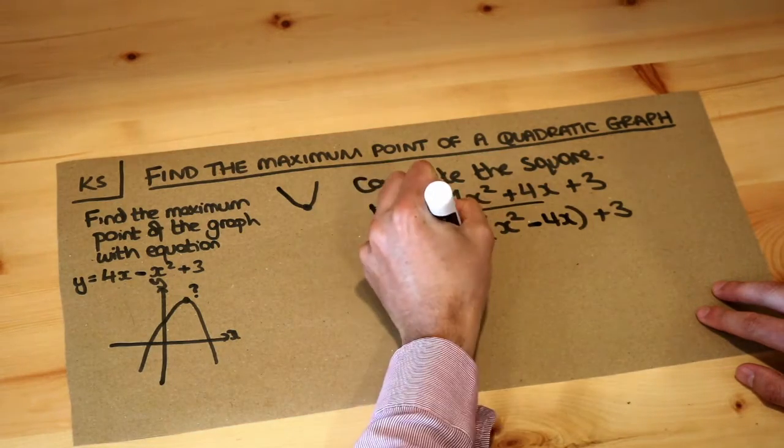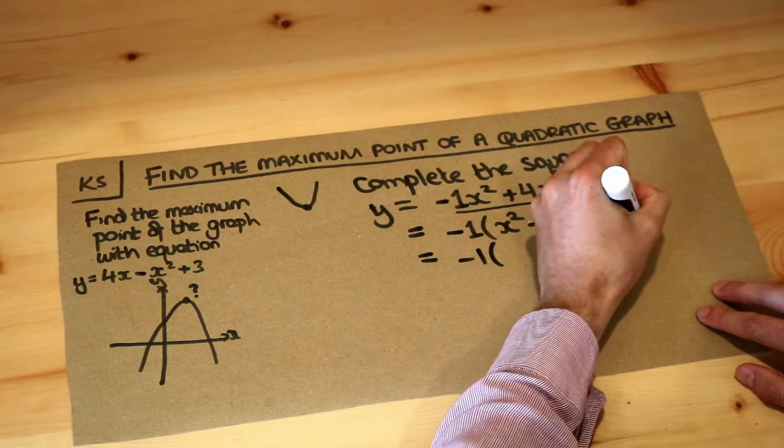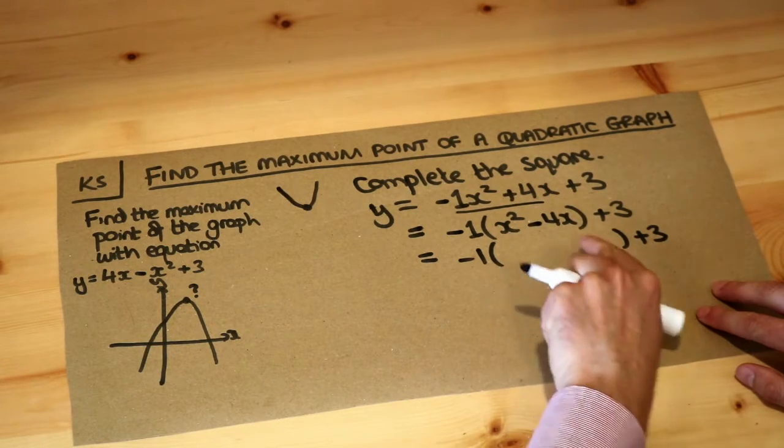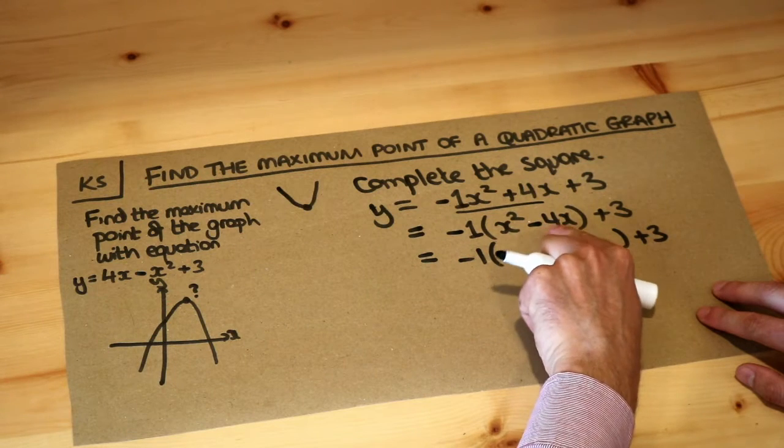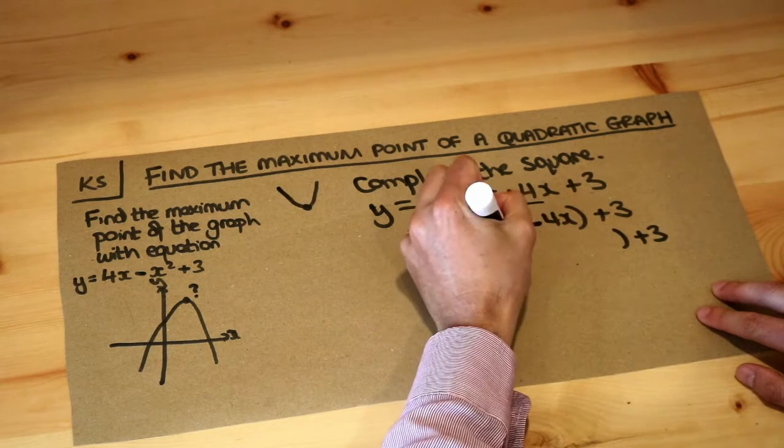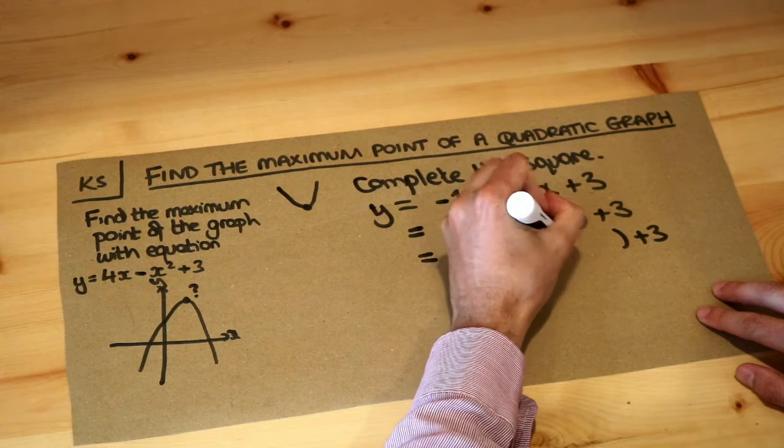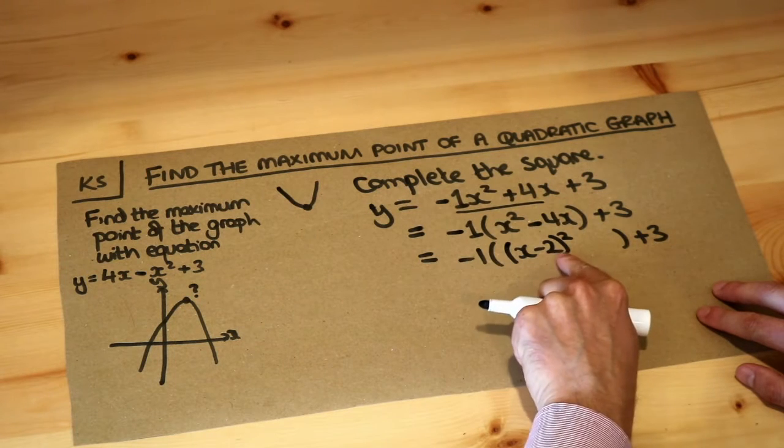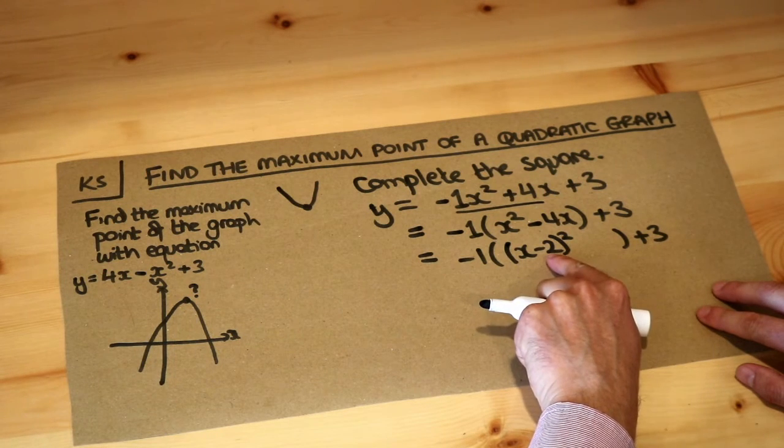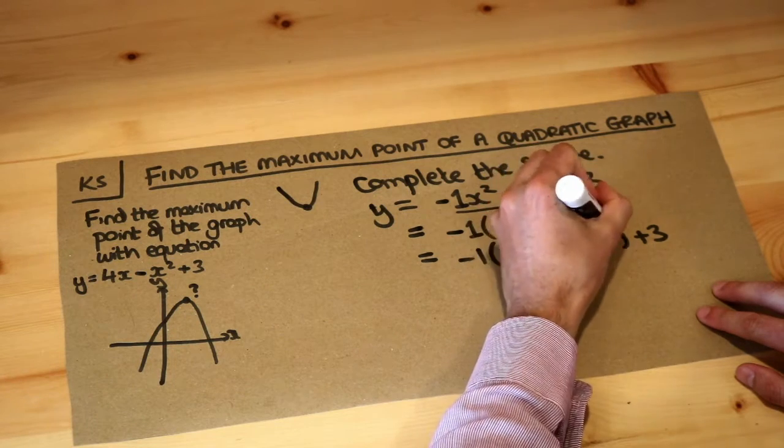And then, inside this bracket, we're going to complete the square. Now remember how we complete the square? We halve the number in front of the x, so it would be x minus 2 squared. And then we square that number, so the minus 2 gets squared to become 4, and then we throw away that 4.